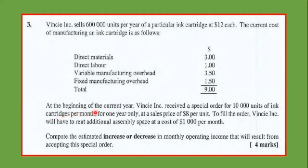At the beginning of the current year, Vince receives a special order for 10,000 units of ink cartridges per month for one year only, at a sales price of $8 per unit. To fill the order, Vince Inc. will have to rent additional assembly space at the cost of $1,000 per month.